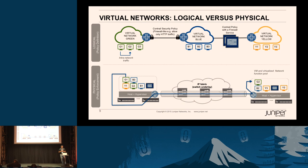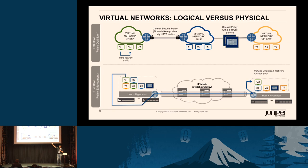Let's look at what an application developer is going to interface with the orchestrator. The application developer is trying to deploy a three-tier web application. All the application developer knows is that each tier needs to be isolated from the other tier. There are also certain policies. In this three-tier web application, there is a front-end implemented by the green virtual machines. The green virtual machines should talk to themselves, but to talk to any other tier, there should be explicit policy.